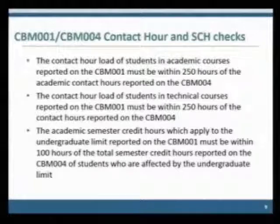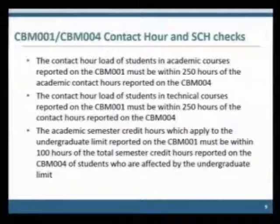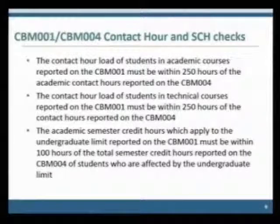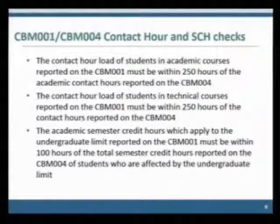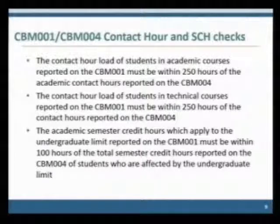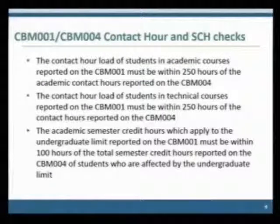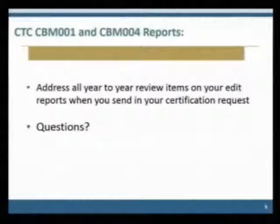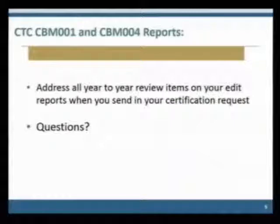We've got CBM-01 and 4 contact hour and semester credit hour checks. The academic courses reported on the 1 must be within 250 hours of the contact hours reported on the 4. In technical courses, it's still 250 hours. The academic semester credit hours, which apply to the undergraduate limit reported on the 1, must be within 100 hours of those reported on the 4. Please address all year-to-year review items on your edit reports when you send in your certification request.